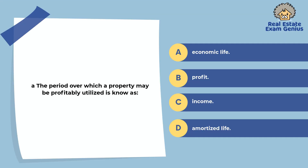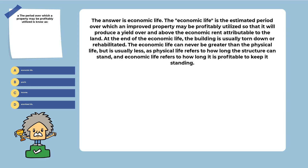The period over which a property may be profitably utilized is known as: economic life, profit, income, or amortized life. The answer is economic life. The economic life is the estimated period over which an improved property may be profitably utilized so that it will produce a yield over and above the economic rent attributable to the land. At the end of the economic life, the building is usually torn down or rehabilitated. The economic life can never be greater than the physical life — physical life refers to how long the structure can stand, while economic life refers to how long it is profitable to keep it standing.